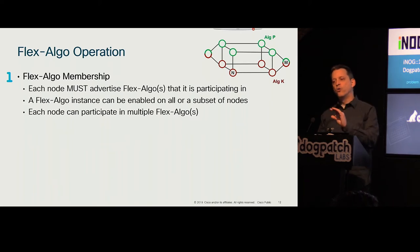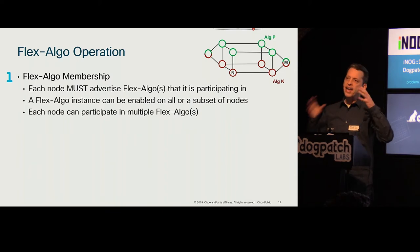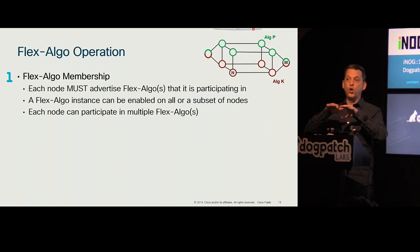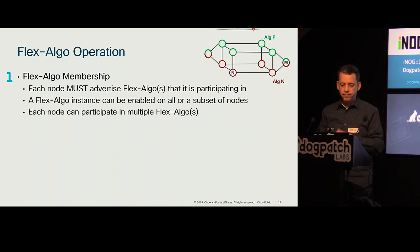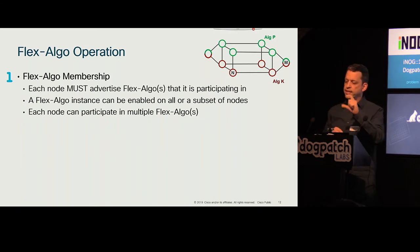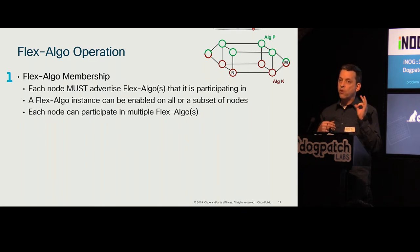I have a node on the red domain — call him N. First, any router needs to advertise membership to a Flex Algo instance. A Flex Algo instance K or P can include all the routers or some of them, and a router can belong to one or multiple Flex Algo instances. These instances K and P are in addition to Algorithm zero, which includes everybody.